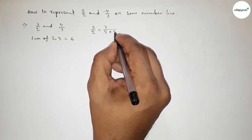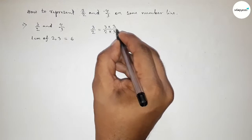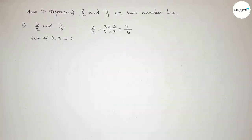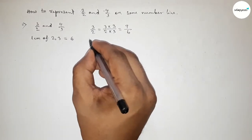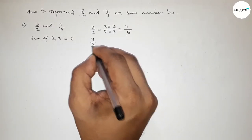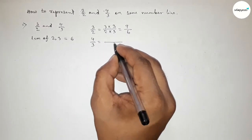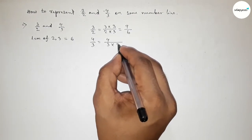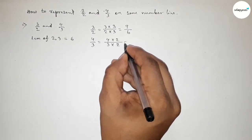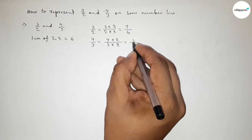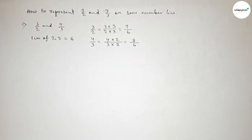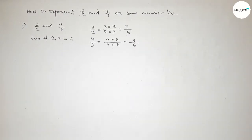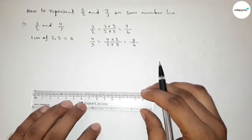First, write down 3 over 2. We have to multiply both top and bottom by 3 to get the denominator 6, so this gives 9 over 6. Similarly, 4 over 3 — we multiply both top and bottom by 2 to get the denominator 6, giving 8 over 6.